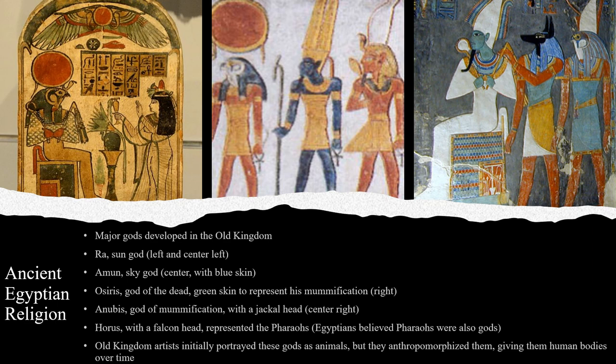Now we'll discuss the ancient Egyptian religion. For the most part, ancient Egypt — from the Old Kingdom through the New Kingdom and even into the Roman period — was a polytheistic society that worshipped a large pantheon of gods and goddesses. Several gods received particular emphasis. Most of these gods were developed during the Old Kingdom and would continue to be worshipped for thousands of years. One of the most important was Ra, the sun god, portrayed with the sun over his body and the head of a falcon — a symbol of the pharaoh.